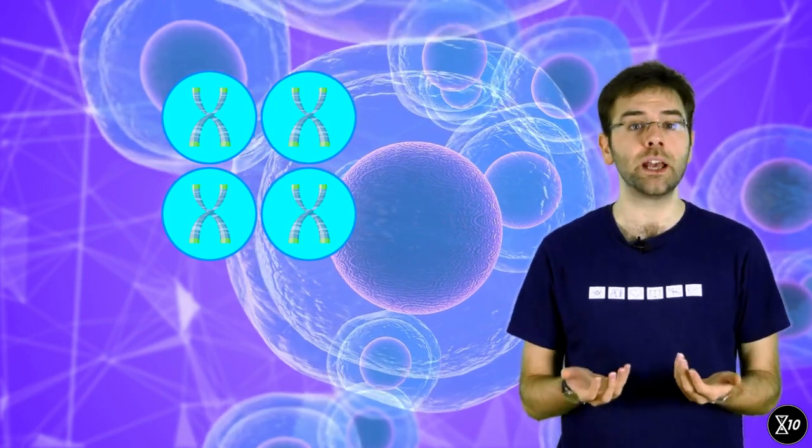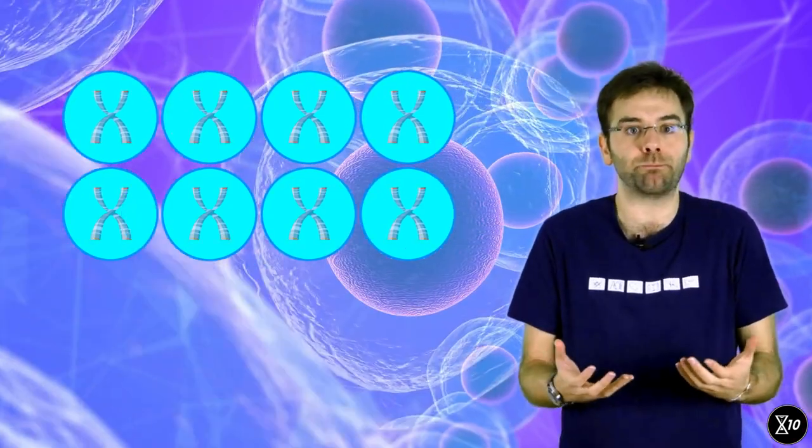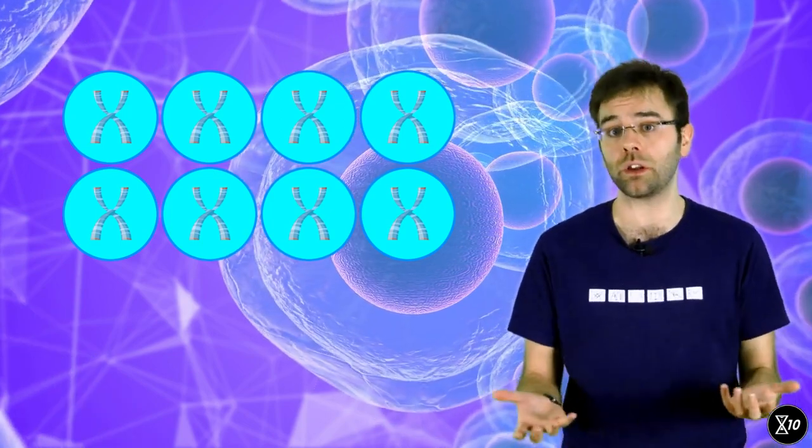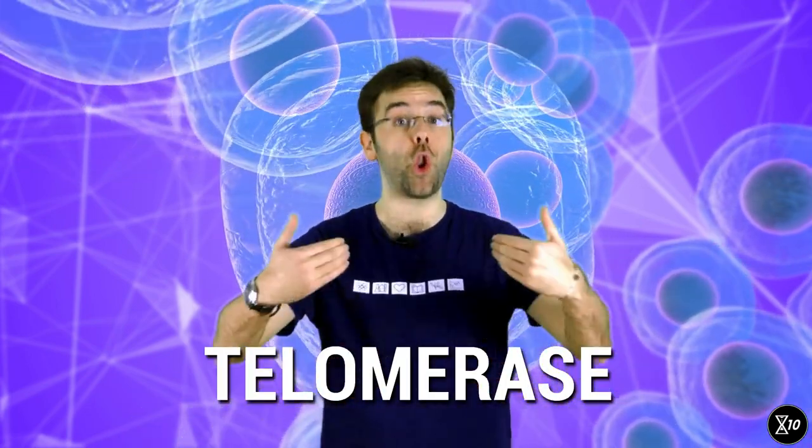When these copied cells divide into more copies of themselves, the telomeres get even shorter. Eventually you'll have copies with basically no telomeres to speak of. At that point, they'll call it a day and stop making copies altogether. Stem cells have developed a mechanism to work around this problem by producing a chemical called telomerase, which can make telomeres longer.